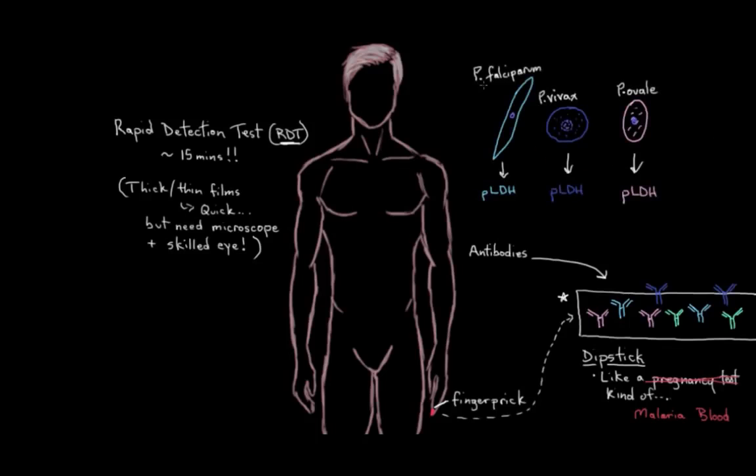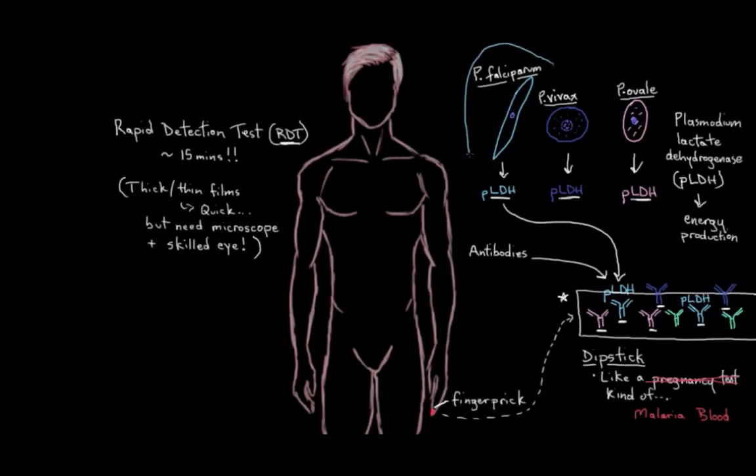But in any case, the dipstick also looks for something else. Each subtype of plasmodium produces a slightly different version of an enzyme that they all have, called plasmodium lactate dehydrogenase, or PLDH. This is an enzyme that helps the plasmodium make energy to do all of its dirty work. So our dipstick actually has antibodies on it that can bind to each of the different PLDHs that the different subtypes of plasmodium would make. Based on the kind of PLDH that our dipstick antibodies bind to, that's how we know what type of malaria parasite we're dealing with. And that's important because some subtypes need their own special kind of treatment for us to completely remove them from our system.